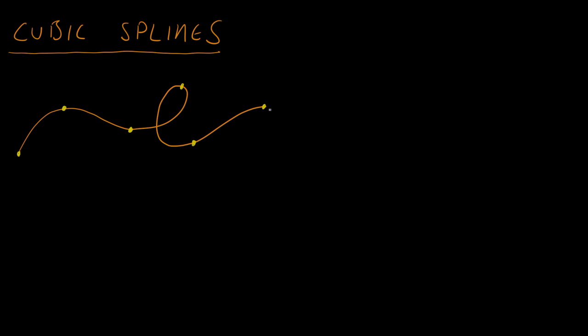So how are we going to do this? Last time we used cubic interpolation to get smooth transitions between two points, so let's keep applying the same idea. We're going to get a function f₀(t) that is a cubic interpolation between the first two points, then another function f₁(t) between the next two points, and so on — f₀, f₁, f₂, f₃, and finally f₄.